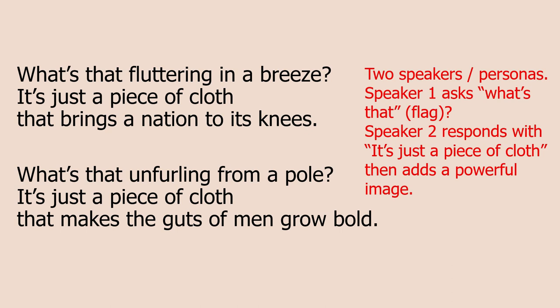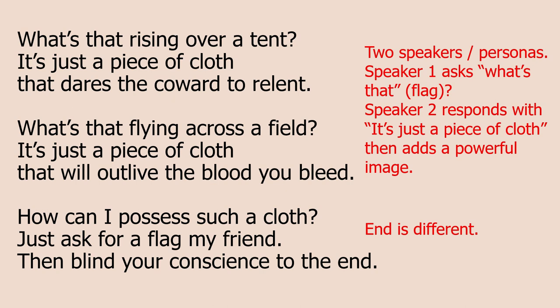So what is going on in this five stanza poem? The first thing you need to understand is that there are two speakers — two voices or personas. Speaker one asks a question in line one of each stanza — "What's that?" — trying to identify a flag. Speaker two answers in lines two and three. In line two, speaker two tends to say "it's just a piece of cloth," repeated throughout most stanzas. In line three, speaker two offers an interesting image of a flag, highlighting both positive and negative qualities. This is repeated across stanzas one through four. Stanza five is slightly different, which I'll explain later.